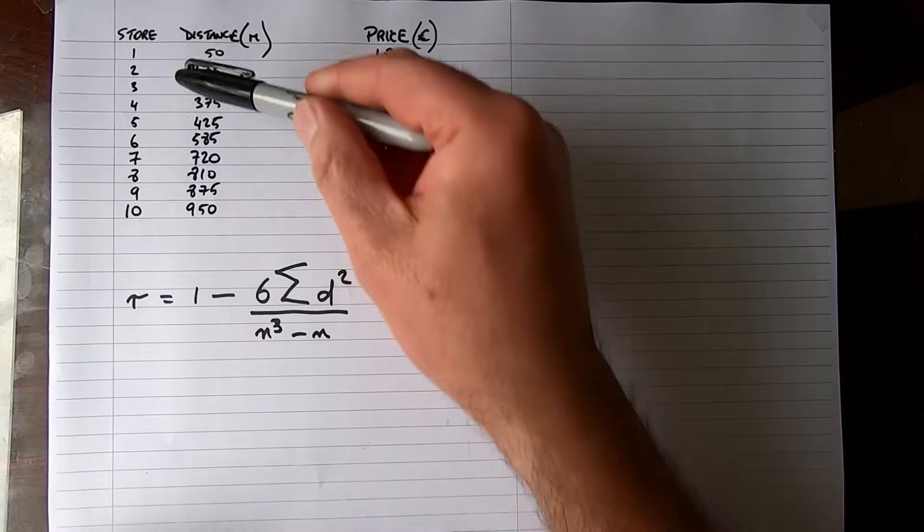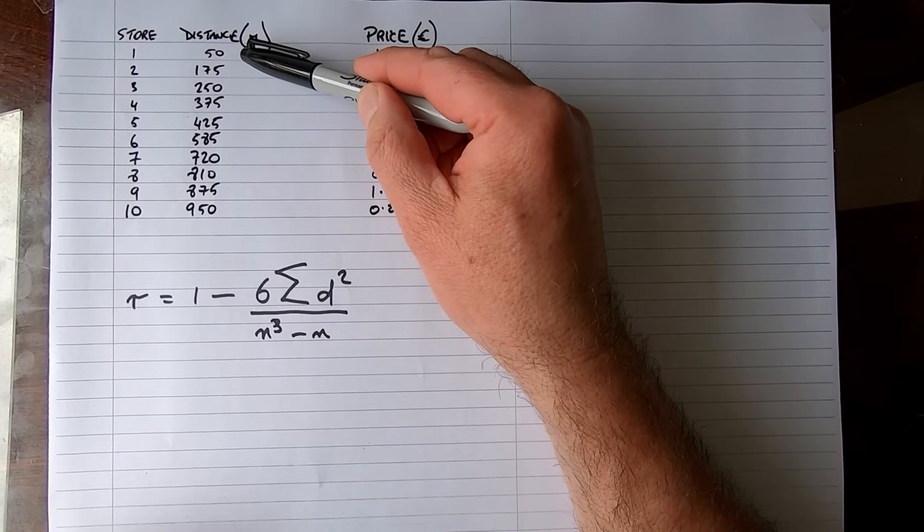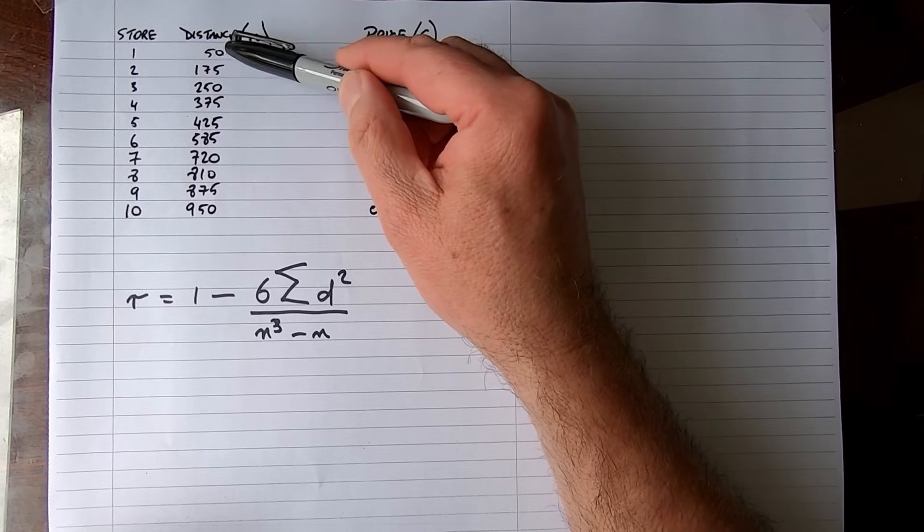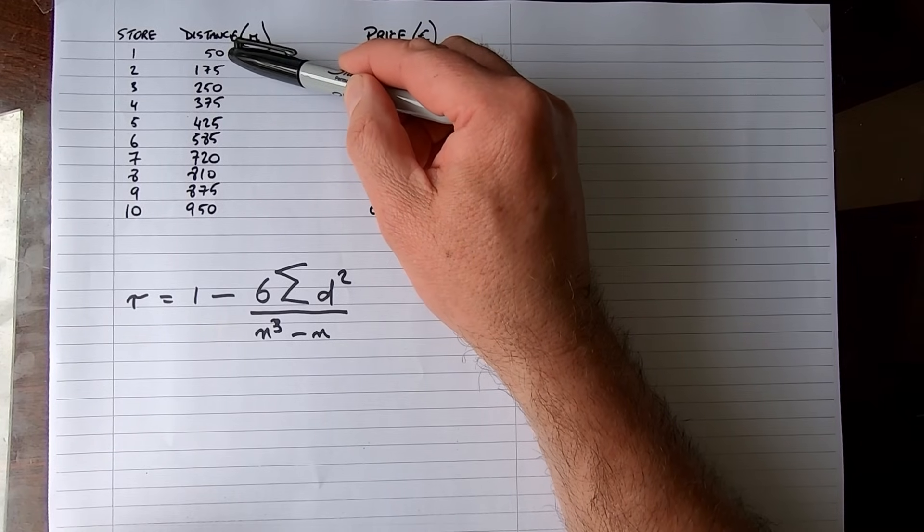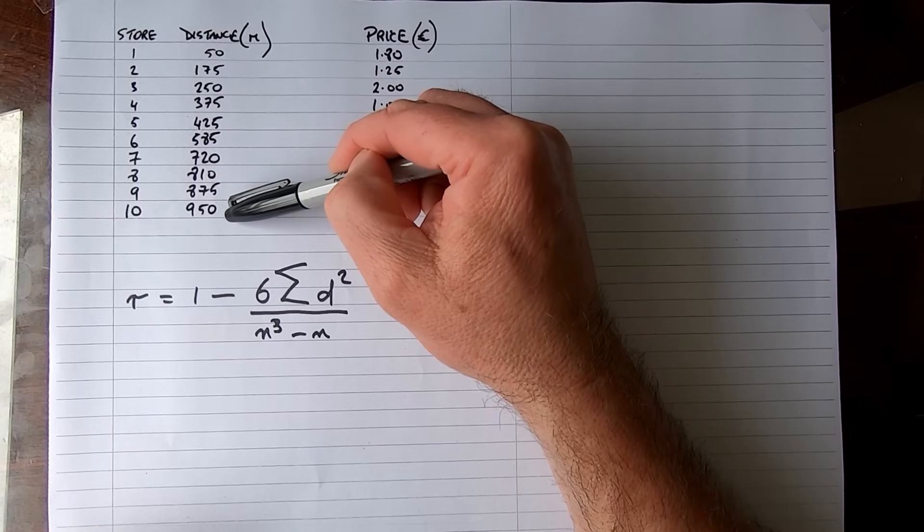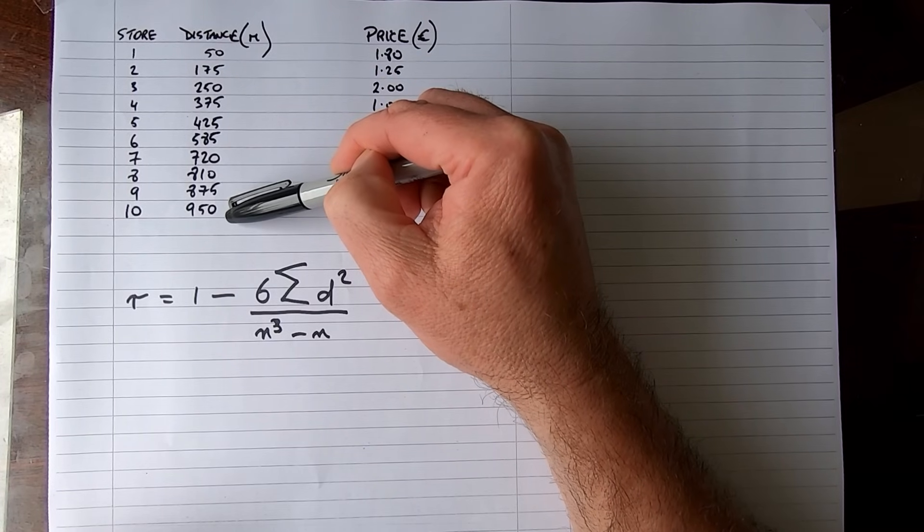Here we have data for 10 stores with a number from 1 to 10, and what we've recorded is the distance that each store is from the city center. So I'm based here in Dublin in Ireland, so the first store is 50 meters from the city center, the second store is 175 meters from the city center, and so on out to the tenth store which is 950 meters from the city center.